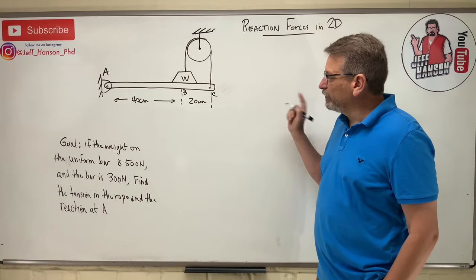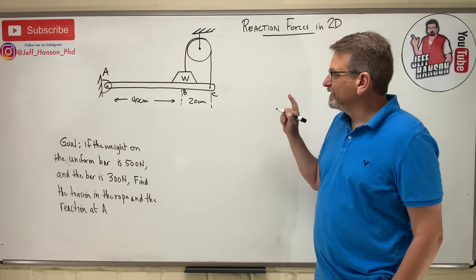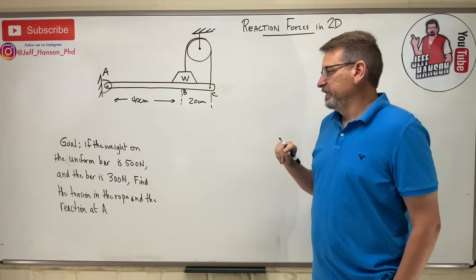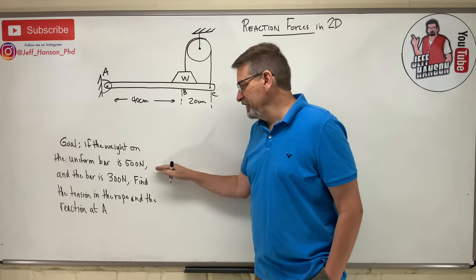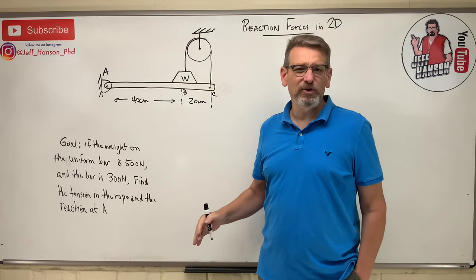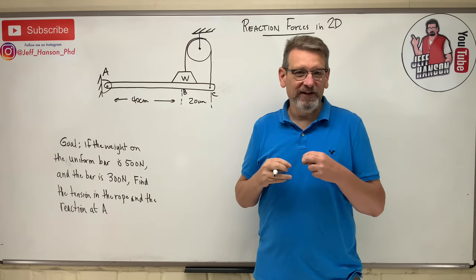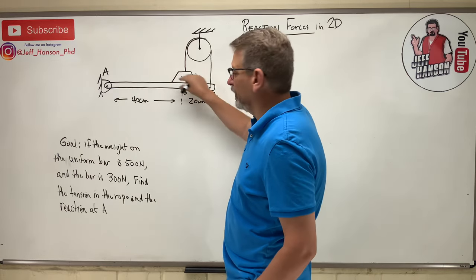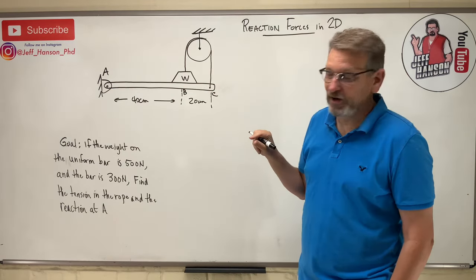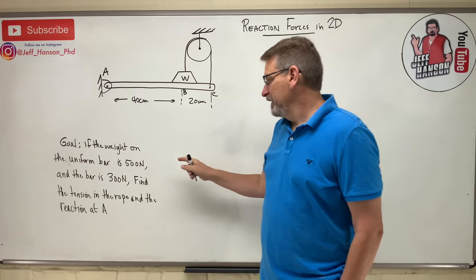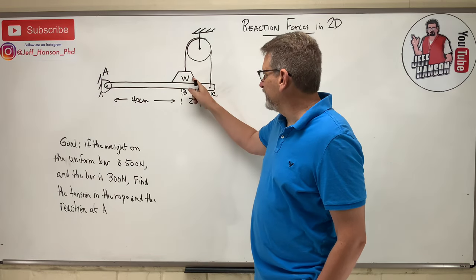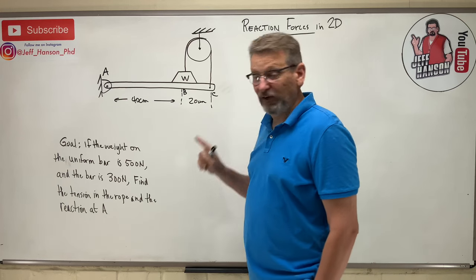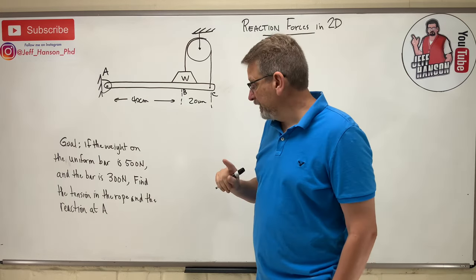Hey gang, we're back. We got another 2D equilibrium problem. This is kind of weird - got a pulley, got a weight on the bar. So it says if the weight on the uniform bar... the uniform bar means that it's constant across there, it's the same density, the same weight all the way across. The weight on the bar is 500 Newtons, and the bar itself has weight 300 Newtons.